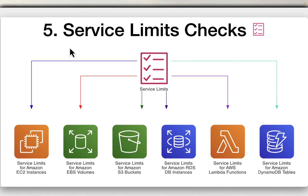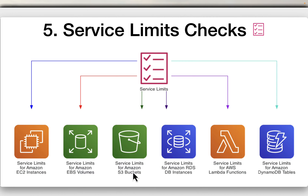The fifth category is service limits checks. For example, service limits for Amazon EC2 instances — whether you are going over the limit of EC2 instances in your account — service limits for Amazon EBS volumes, S3 buckets, Amazon RDS DB instances, AWS Lambda functions, and Amazon DynamoDB tables. It checks whether you are close to those upper limits, which could cause automation failures.